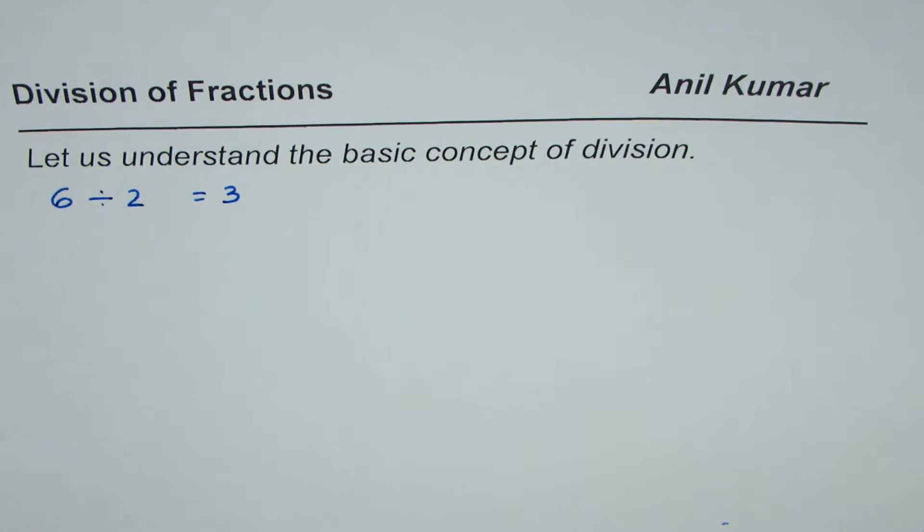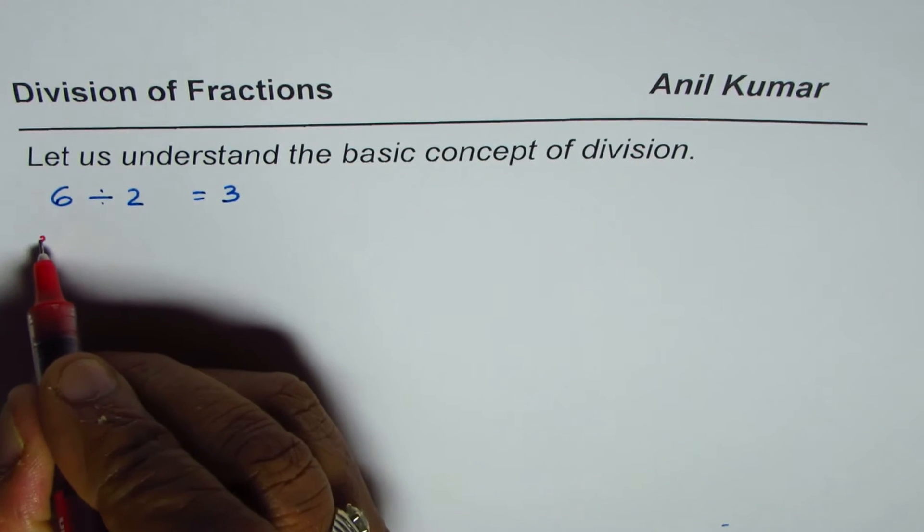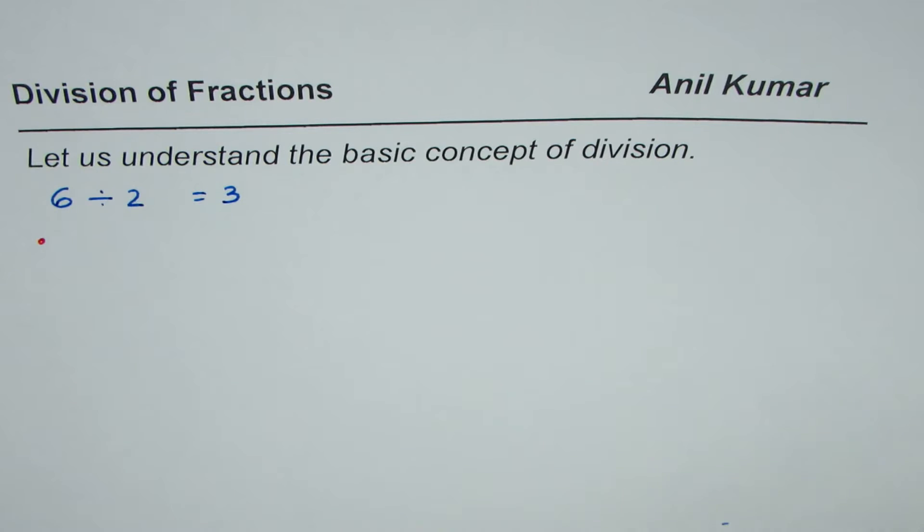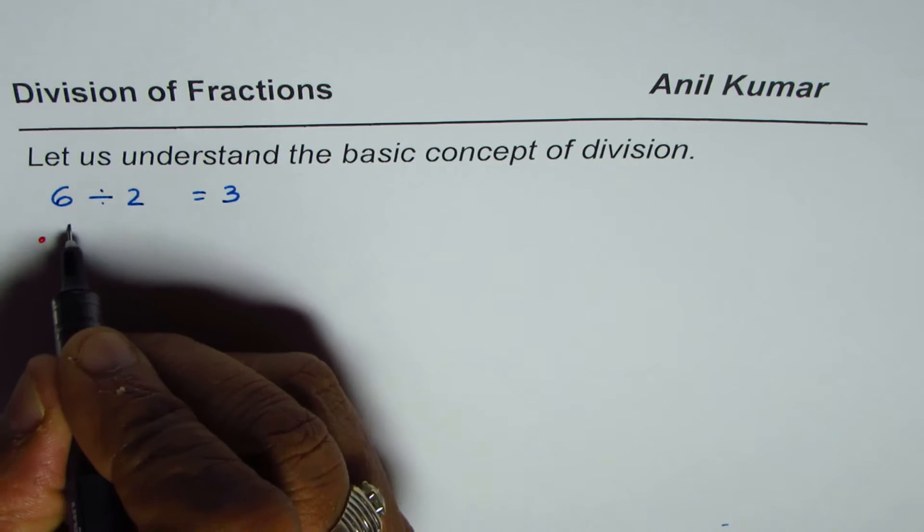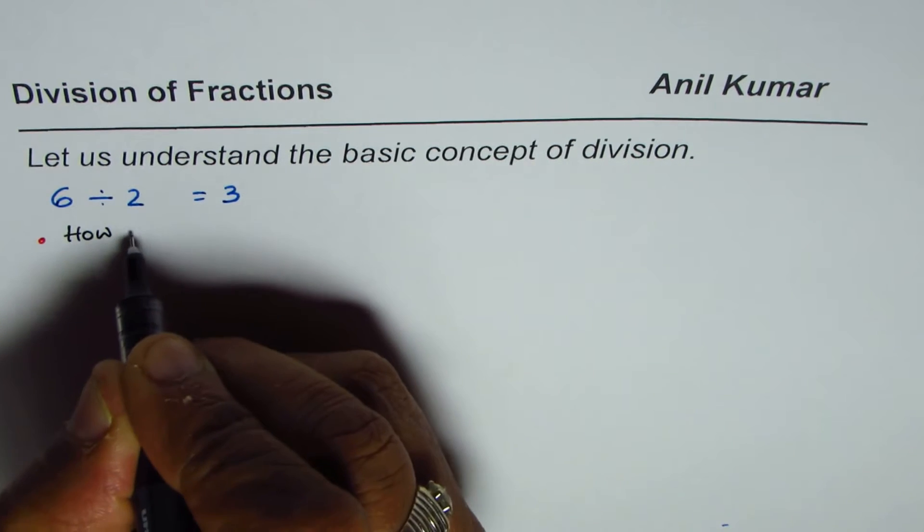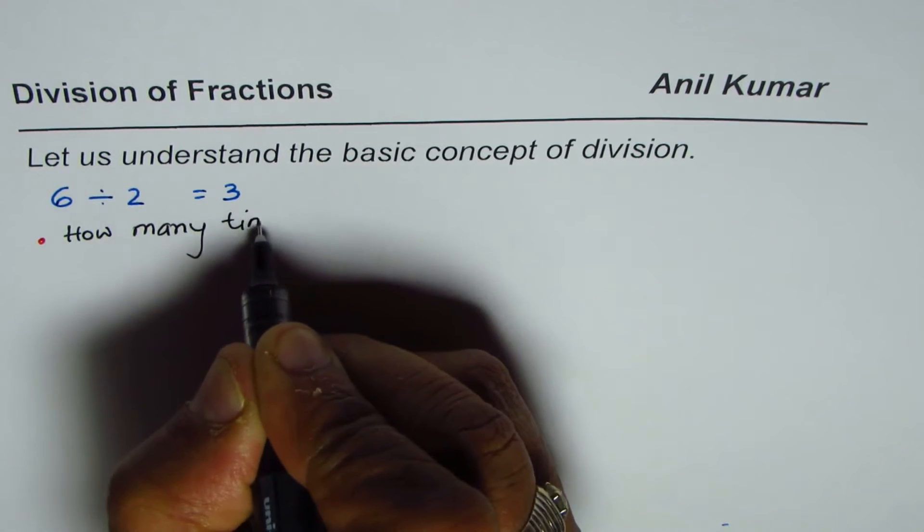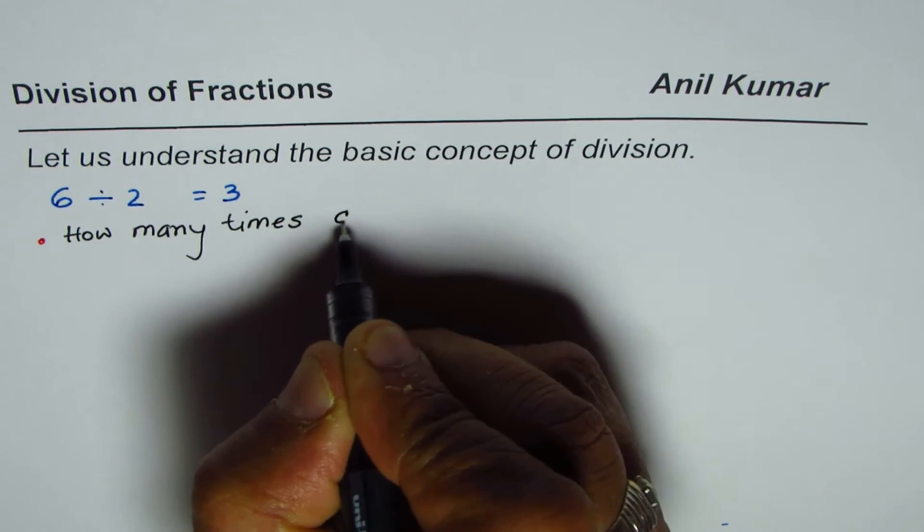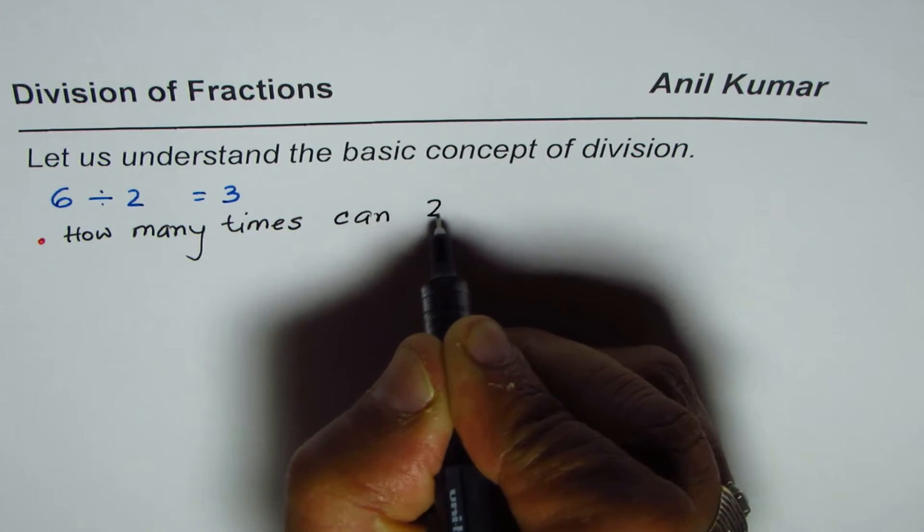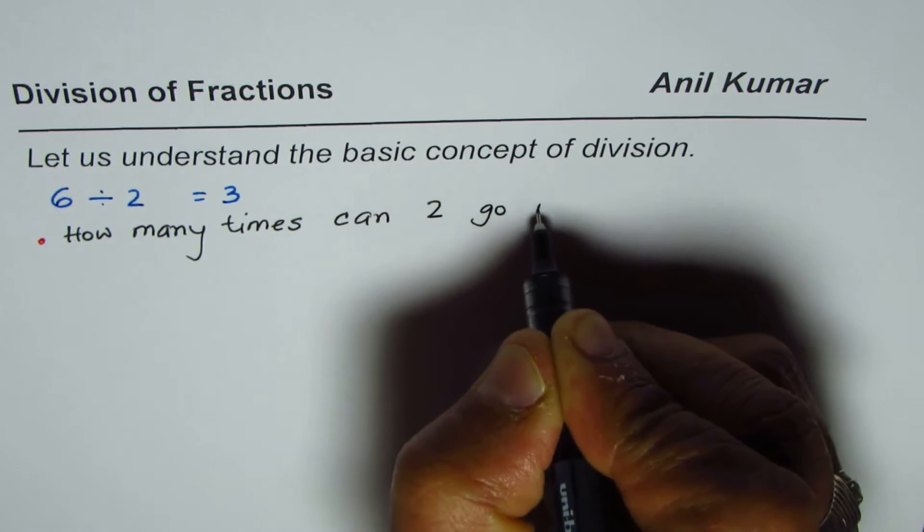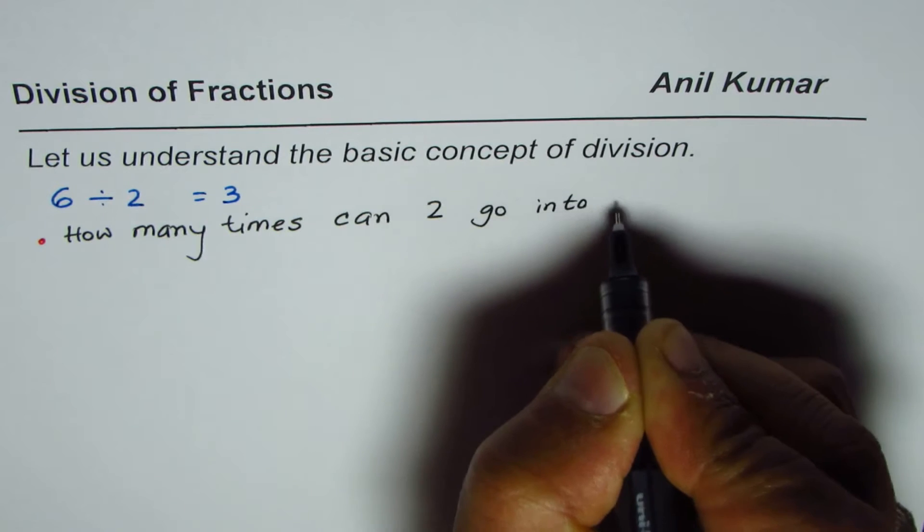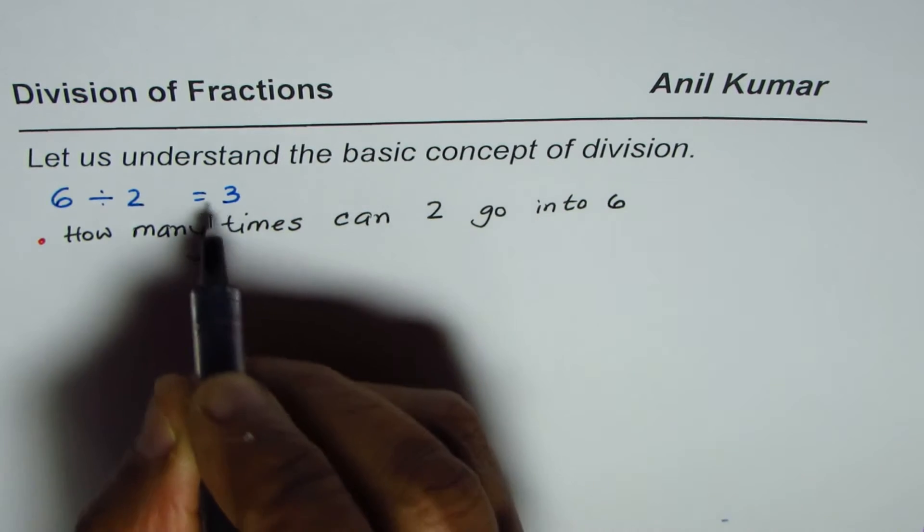What do we understand by dividing 6 by 2? Basically, we are asking two questions here. The first question is: how many times can 2 go into 6? So, the answer is 3.